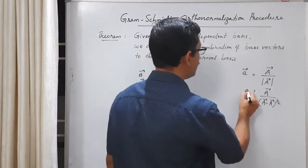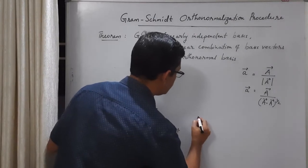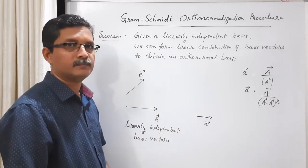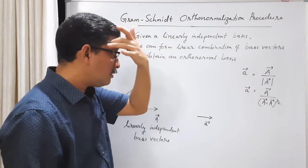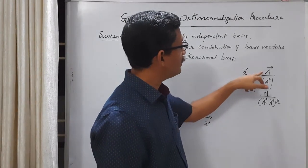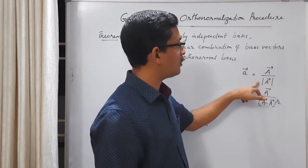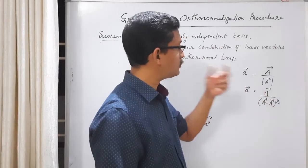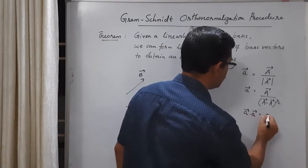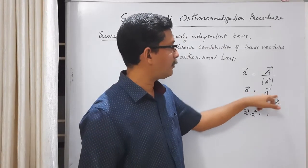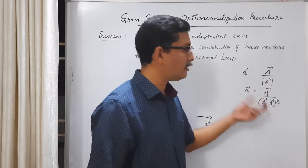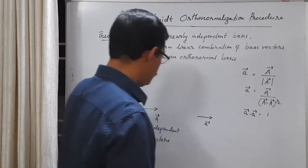We can verify that small a dot small a equals A dot A divided by the square root of A dot A times the square root of A dot A, which gives A dot A divided by A dot A — that is 1. So this vector is normalized. Now I will draw this: vector A, along the same direction of A with magnitude 1, because we divided the vector by its own magnitude. We can shift vectors geometrically while preserving magnitude and direction, so let me place vector B with its origin coinciding with that of small a.